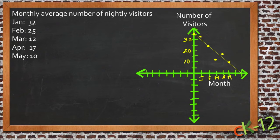What we've done here is document the average number of nightly visitors through a period of five months - January, February, March, April, May - and then we plotted on our graph the number of visitors for each month. Each of these points here represent one of those plots, and you can see they correlate to the data over here.